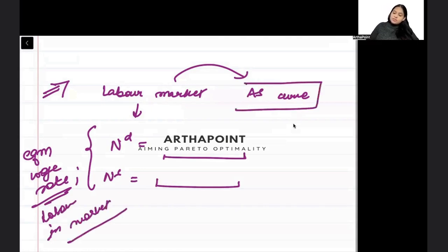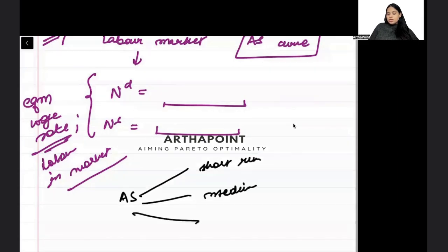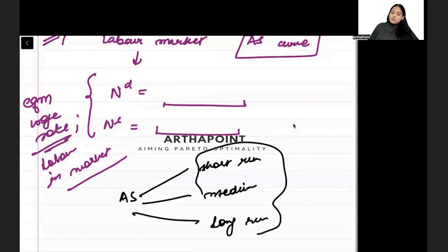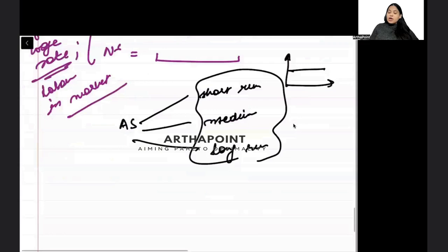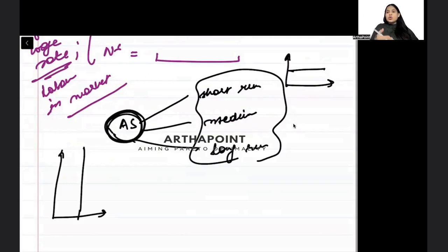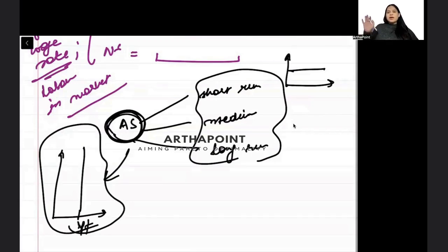I can also ask you the shape of the AS curve: what is the shape of the AS curve in the short run, in the medium run, and in the long run? Why is the AS curve horizontal in the short run? Options like due to sticky prices or flexible prices may be given. Who says the AS curve will be flexible? Classical, Keynesian, or neoclassical? According to whom is the AS curve vertical? According to the classicals, because it is the long run at full employment level. Properties of the AS and AD curve can be asked in the exam.